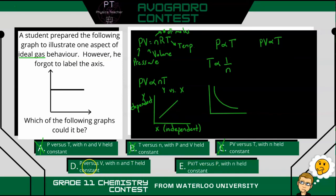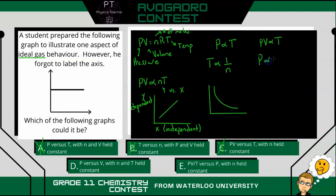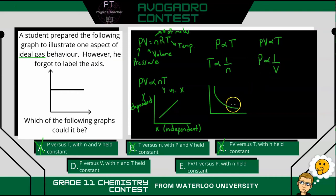Next is P versus V. If n and T are held constant, then P is inversely proportional to V, meaning as volume increases, pressure decreases. So we get an inverse relationship again — not this graph. So it's not D.